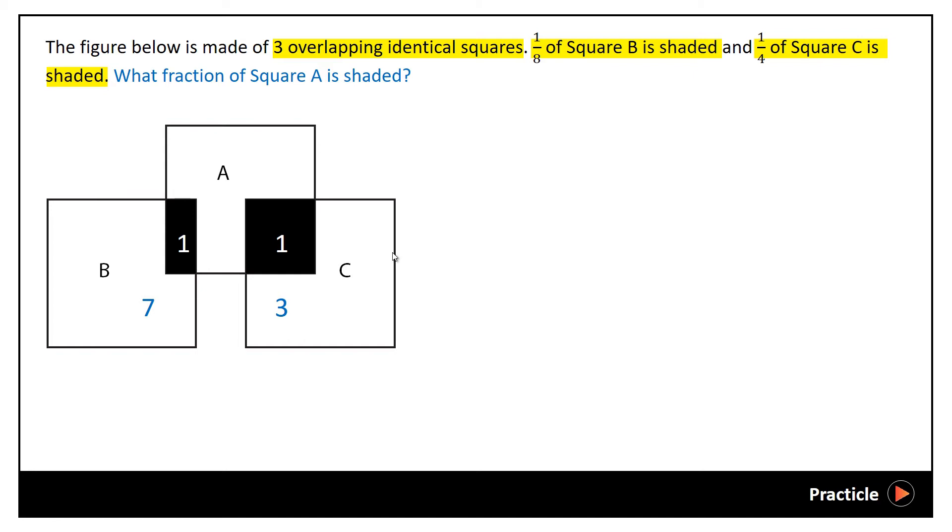Before we start comparing and jumping to conclusions, there is one important thing that we need to take note. Remember that the squares are actually identical. Why is it that square B has a total of 8 parts, but square C has a total of 4 parts? Something has to be done to make them equal.